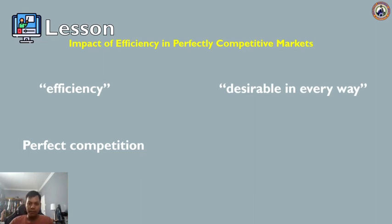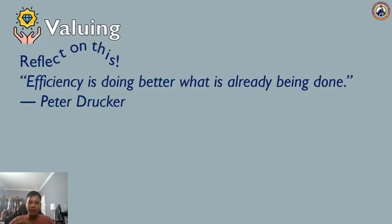Real world markets include many issues that are assumed away in the model of perfect competition, including pollution, inventions of new technology, poverty which may make some people unable to pay for basic necessities of life, government programs like national defense or education, discrimination in labor markets, and buyers and sellers who must deal with imperfect and unclear information. However, the theoretical efficiency of perfect competition does provide a useful benchmark for comparing the issues that arise from real world problems.